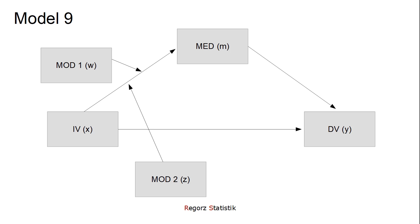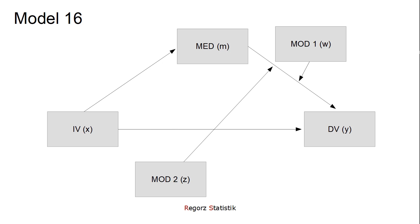Model number 9: both moderators moderate the A path. Model number 10: both moderators moderate the A path and the direct C' path. Model 16: both moderators moderate the B path. And model 17: both moderators moderate the B path and the C' path.